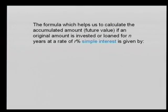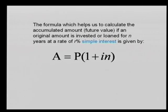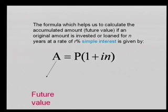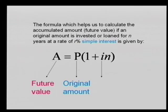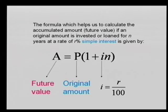The formula helps us calculate the future value or accumulated amount. If an original amount is invested or loaned for N years at a rate of R% simple interest per annum, the formula is A = P(1 + iN). A is the future amount. P is the original amount. i is R over 100 — always expressed as a decimal. And N is the number of years.